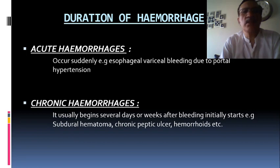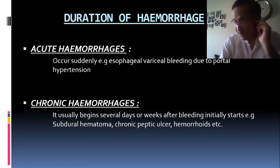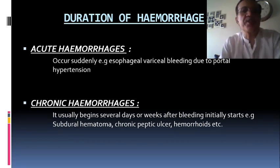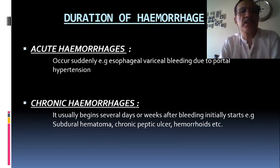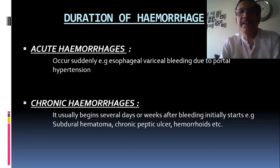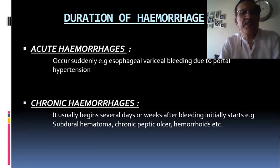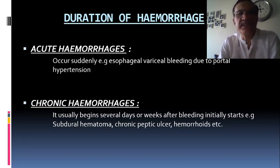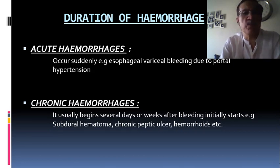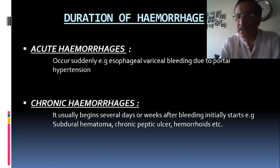By duration: Acute hemorrhage occurs suddenly — for example, esophageal variceal hemorrhage or bleeding due to portal hypertension. Chronic hemorrhage occurs slowly and steadily over a passage of time, beginning several days to weeks after bleeding initially starts — for example, subdural hematoma, chronic peptic ulcer, and hemorrhoids.